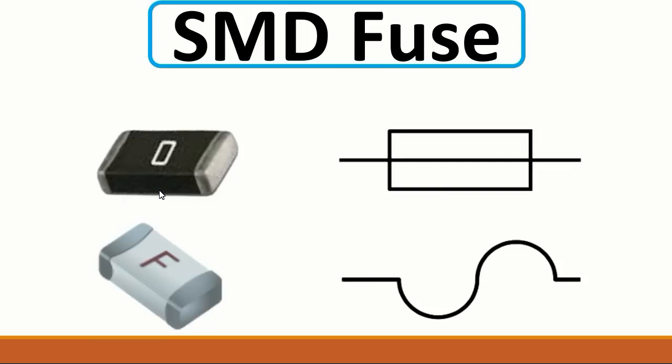Here we have an SMT fuse. This is the symbol for the fuse. This kind of component is used for protection — it protects the circuit from high voltage and high current. You will always find this fuse at the input of every circuit, especially near the power jack or DC jack, in order to protect the motherboard from high current or high voltage. You can also find a fuse resistor — if you check it with a multimeter, you should get a very low or near-zero resistance reading.